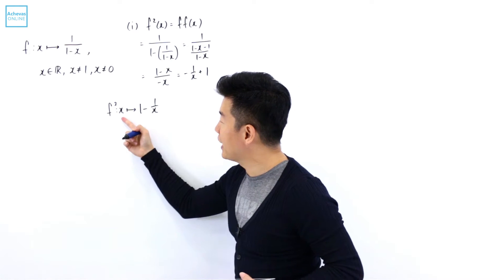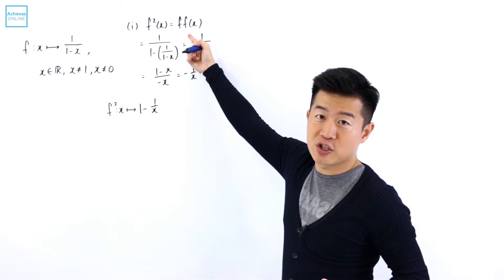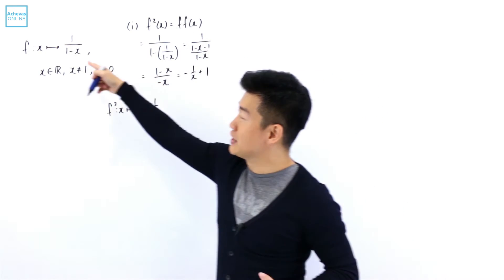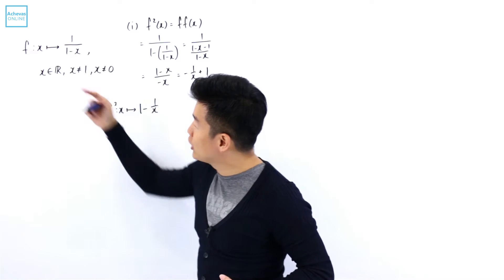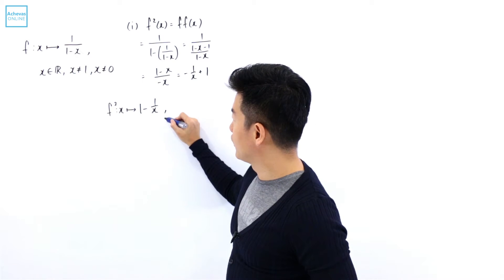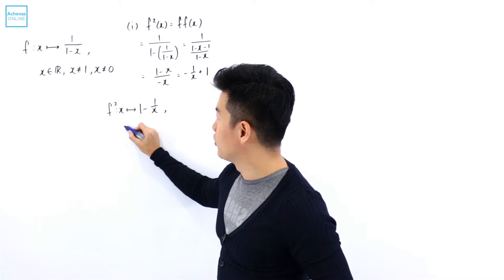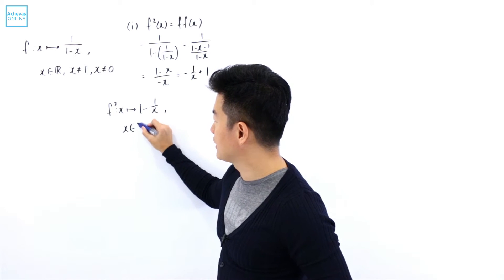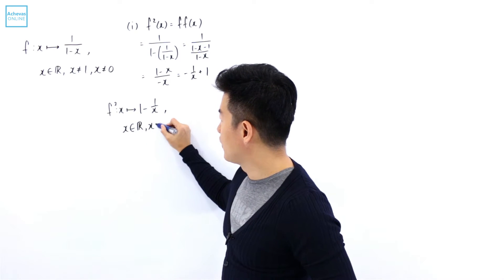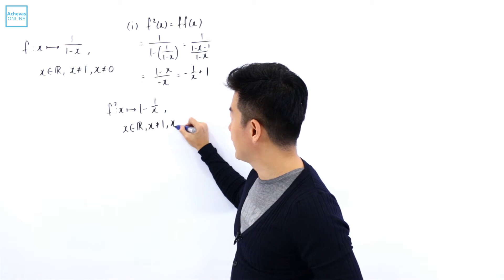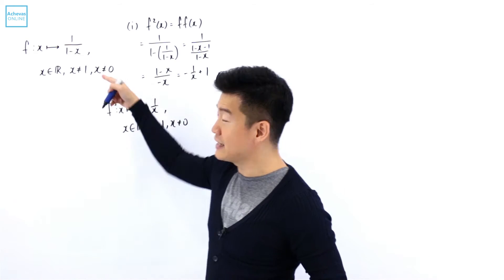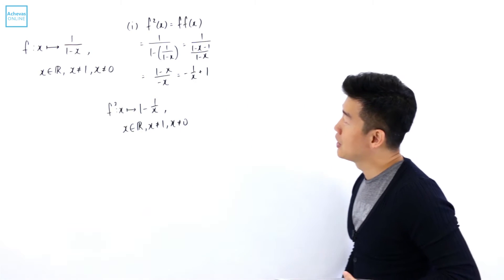The domain is going to be the domain of the first function of the composite function, which is the same as the domain of f(x). So the domain is x belonging to all real numbers, where x cannot be equal to 1 and x cannot be equal to 0 — exactly the same as the domain of f(x).